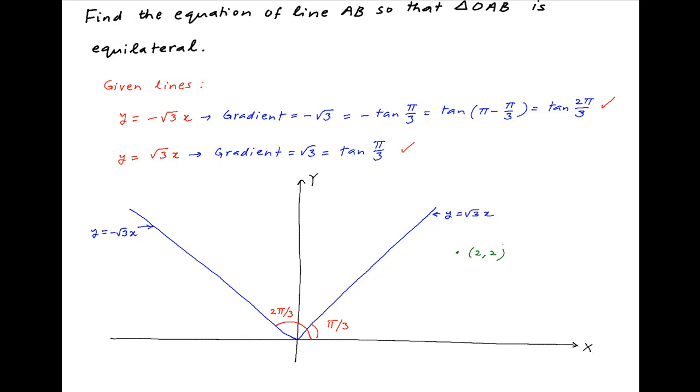Now we are given that a line is drawn through the point (2,2) that cuts the given lines at the points A and B respectively.